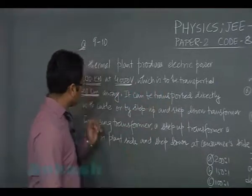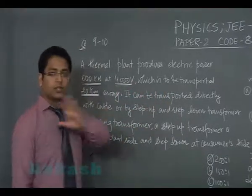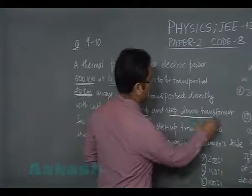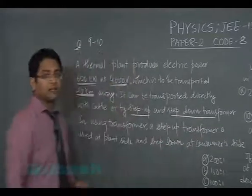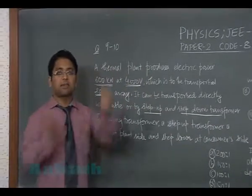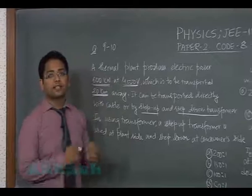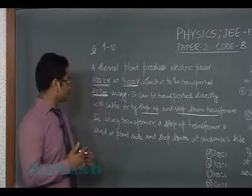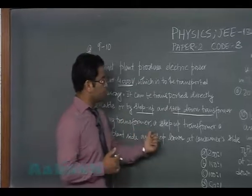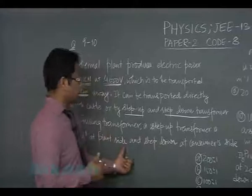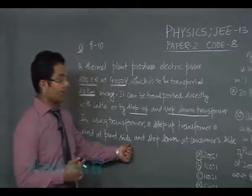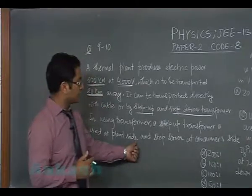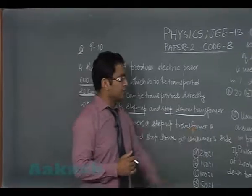It can be transported directly with cable, or by step-up and step-down transformer. At the production point you step it up so voltage increases and current decreases, and the loss is checked out. In using transformer, a step-up transformer is used at the plant side so that current is decreased and joule's loss is checked out, and step-down at the consumer side.